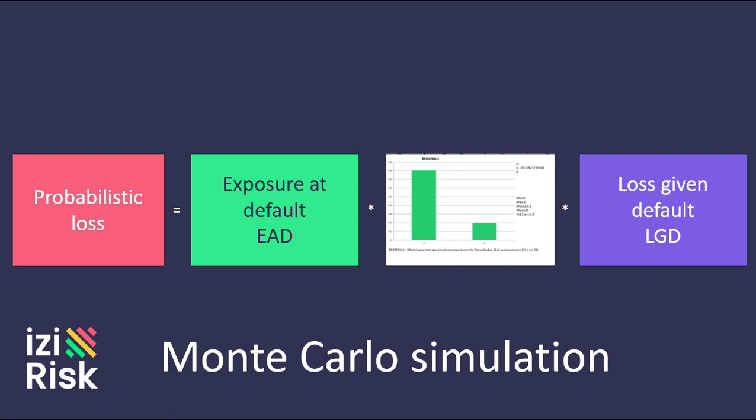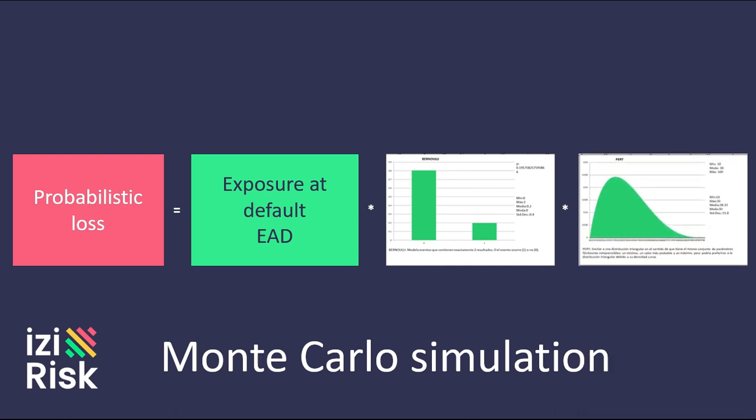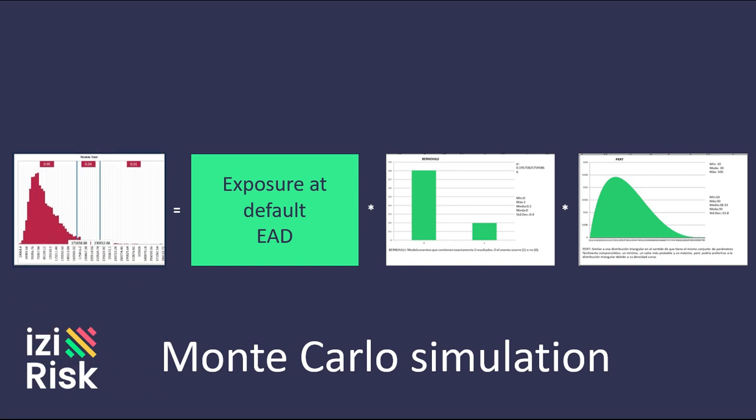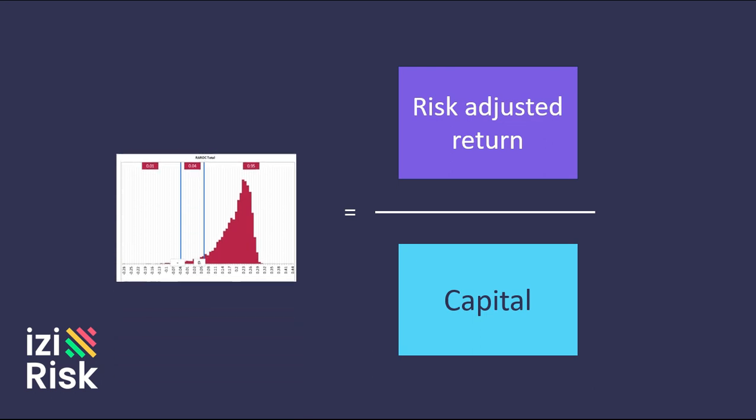The other factor that is substituted to generate a probabilistic loss is the loss given default, which will assume a continuous function, also simulated during the Monte Carlo simulation process. By multiplying these factors during the simulation, a probability curve of the loss given default will be obtained. This is where the return is essentially risk-adjusted. With this risk-adjusted return, the RAROC will be displayed in a probabilistic way, that is, as a probability distribution.